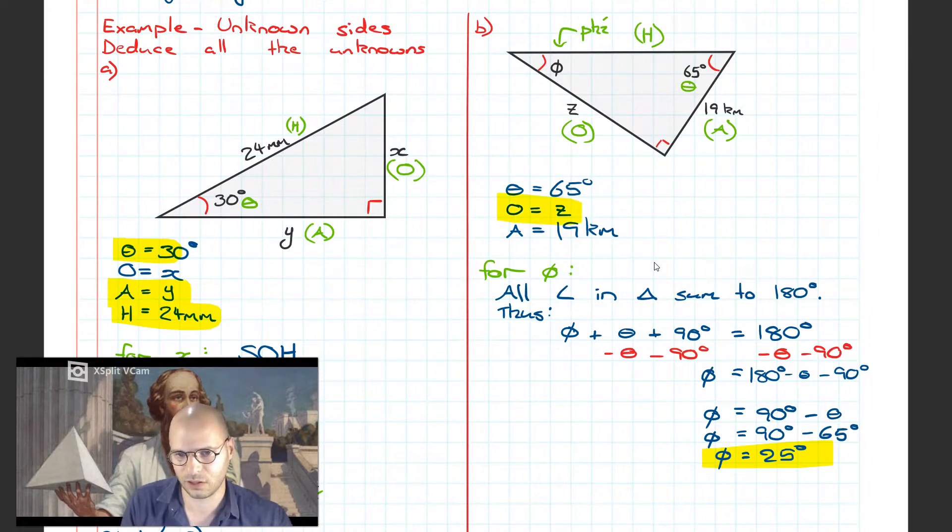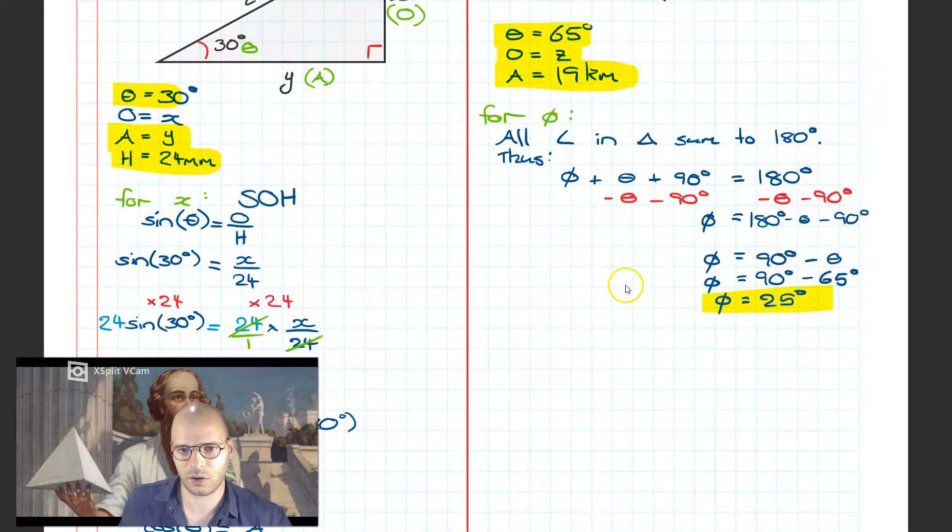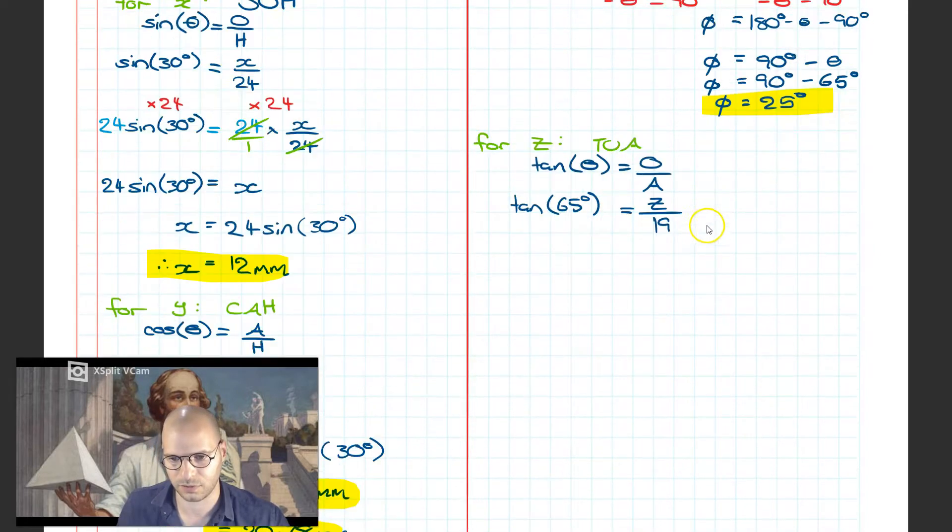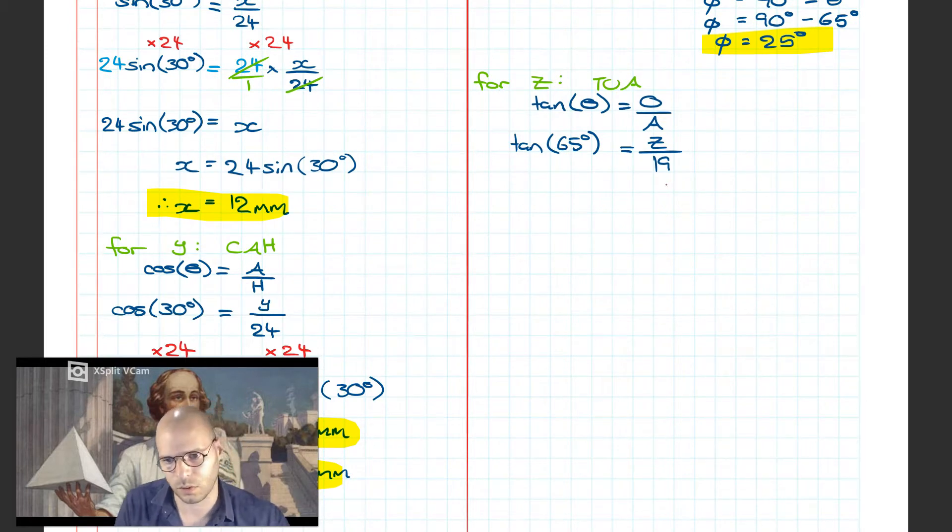Solving for the unknown of Z, we actually have to use trig for this. We've got theta, the opposite, and the adjacent. So what that's going to give us is TOA, standing for tangent or tan theta is equal to the opposite divided by the adjacent. Subbing in the values, we're going to go tan of 65 degrees is going to be equal to Z over 19 kilometers, leaving out the units just for now. Rearranging, we're going to go times 19 on both sides. I'm just going to skip down to the final form, so Z is going to be 19 tan of 65 degrees.